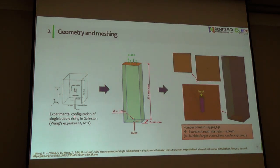The first step of the simulation, based on the experimental configuration of one experiment of 2017, I make the geometry for the reactor. And after that, I mesh it using the Fluent Meshing with the number of mesh over 5 million, so all the bubbles larger than 0.6 mm can be captured by the simulation.